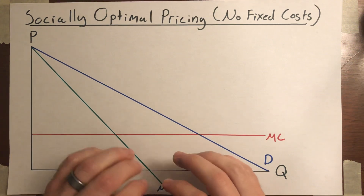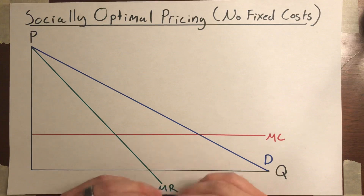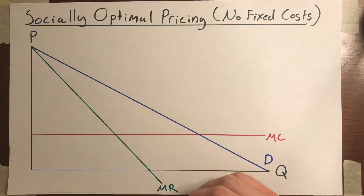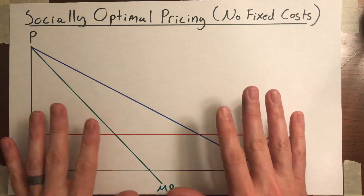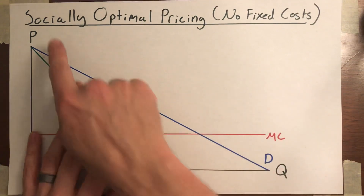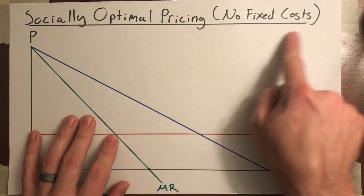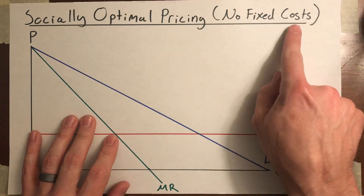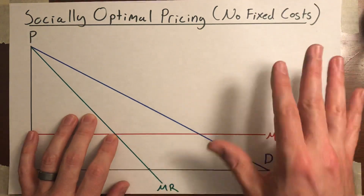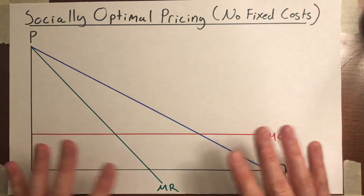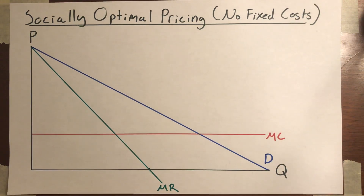In the last video, we talked about what we expect a monopolist to actually do — what price will they set. In this short video, we're going to talk about what's the price we wish they would set: what would be the socially optimal price that they could charge. In this video, we're assuming that the firm faces no fixed costs. In a few videos from now, we'll relax that assumption and see how it affects things, but for now, to keep it simple, there are going to be no fixed costs.